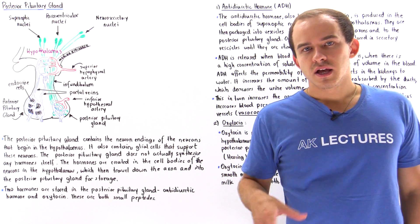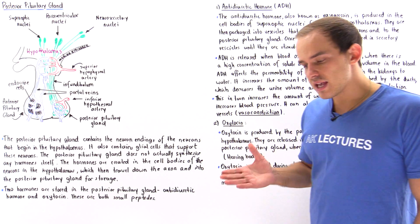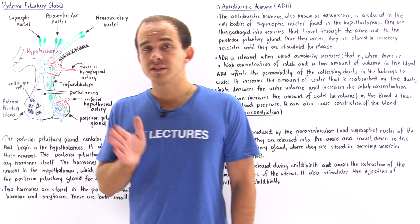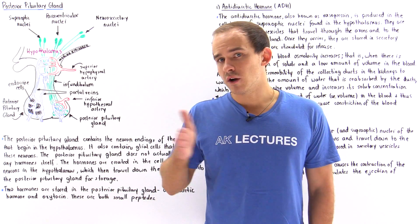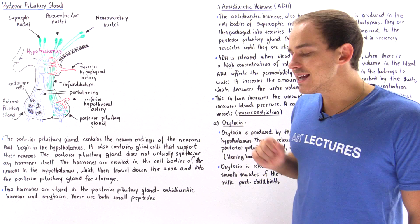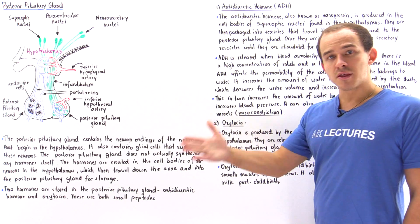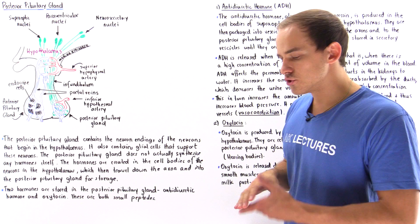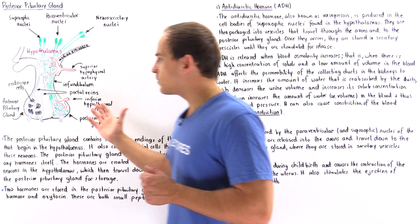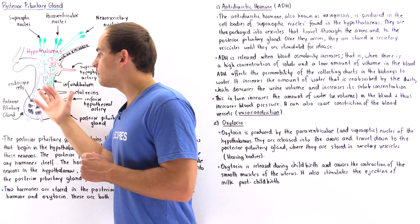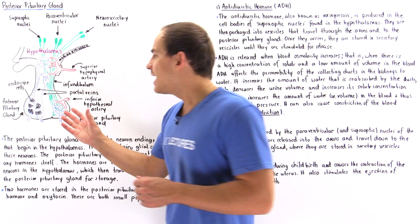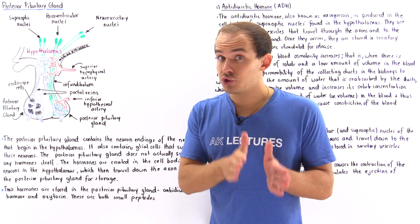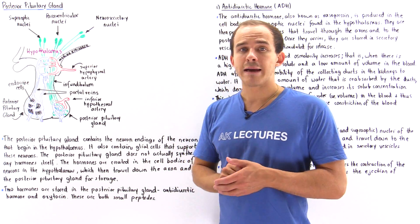Previously we discussed the pituitary gland, also known as the hypophysis, which consists of two sections: the frontal section known as the anterior pituitary and the back section known as the posterior pituitary. We focused on the anterior pituitary gland, which releases and produces six different types of hormones.